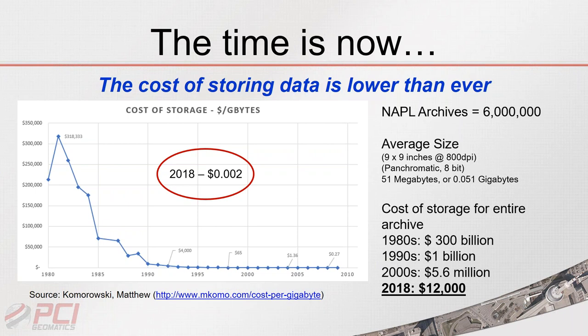The National Air Photo Library in Ottawa, Canada possesses roughly six million air photos — about 90% on paper. If scanned at 800 DPI single-channel panchromatic, that's roughly 51 megabytes per image. Storing all of those was not feasible in the 1980s or 1990s, barely possible in the 2000s, but today the cost of data storage makes it ridiculously affordable.